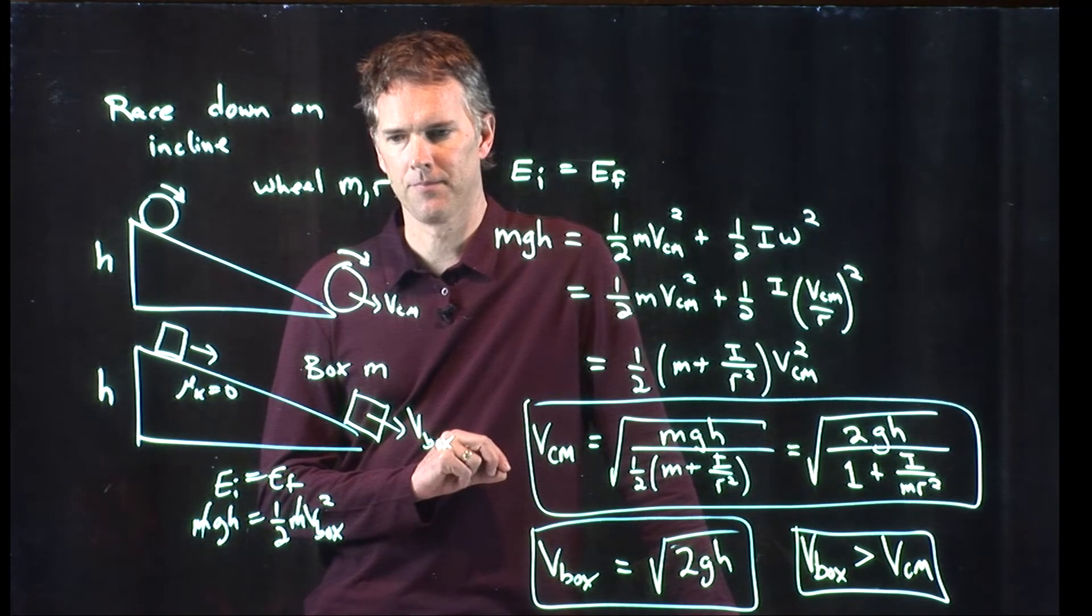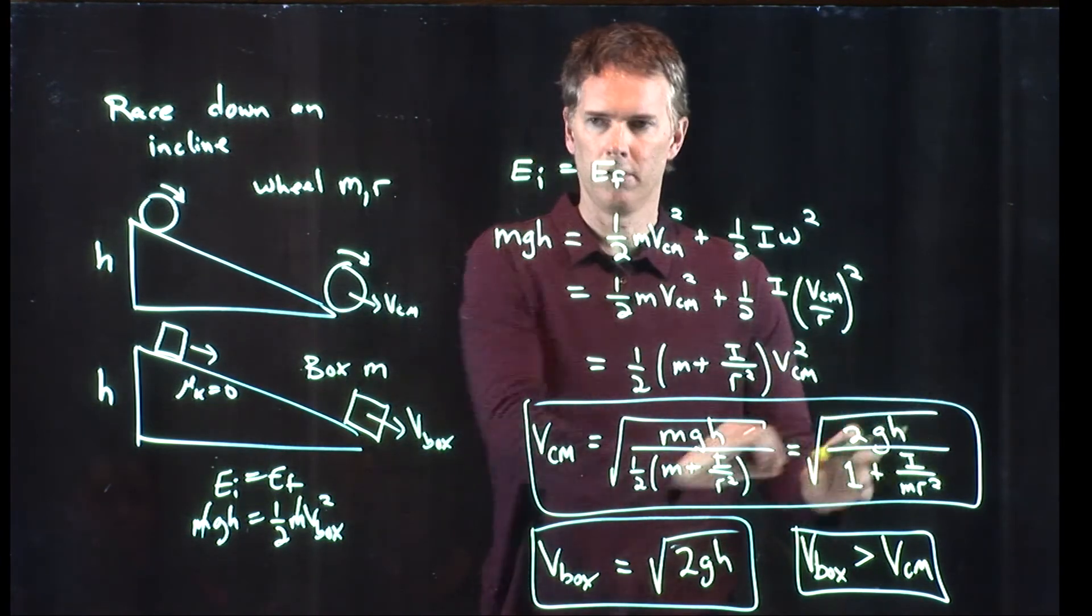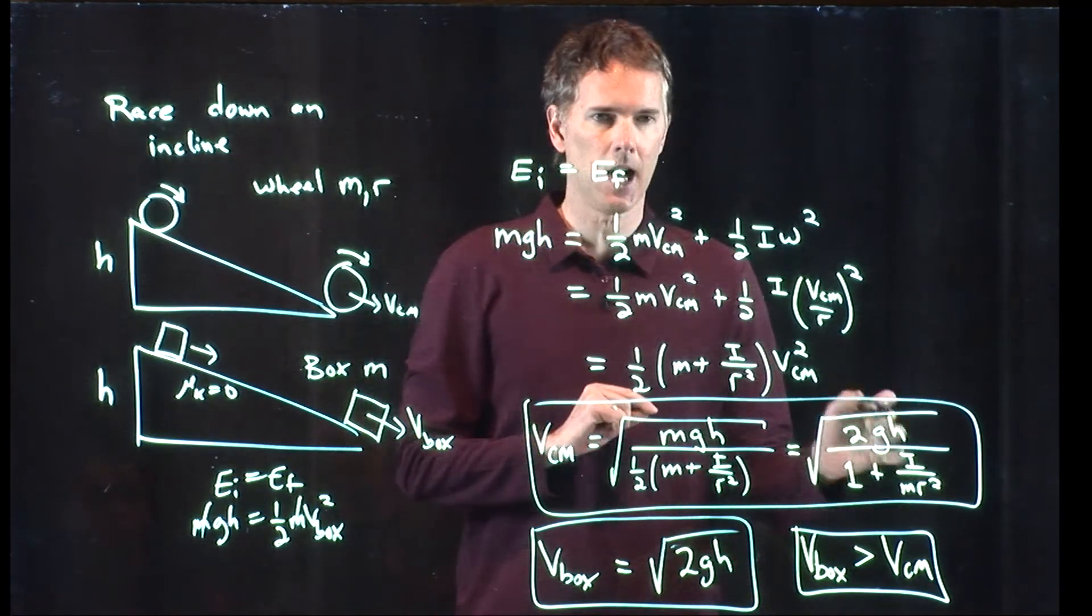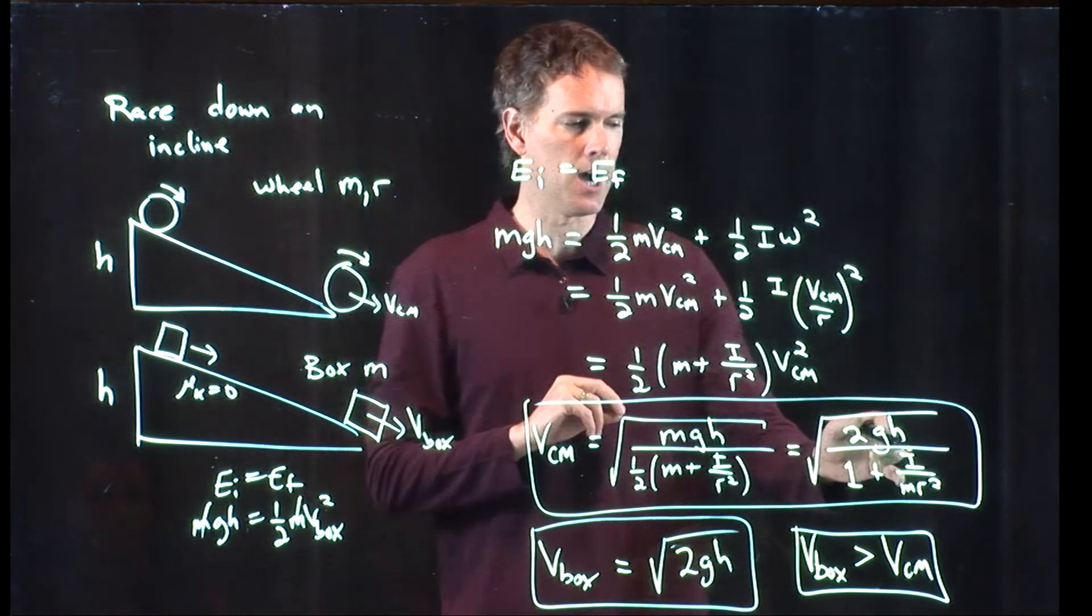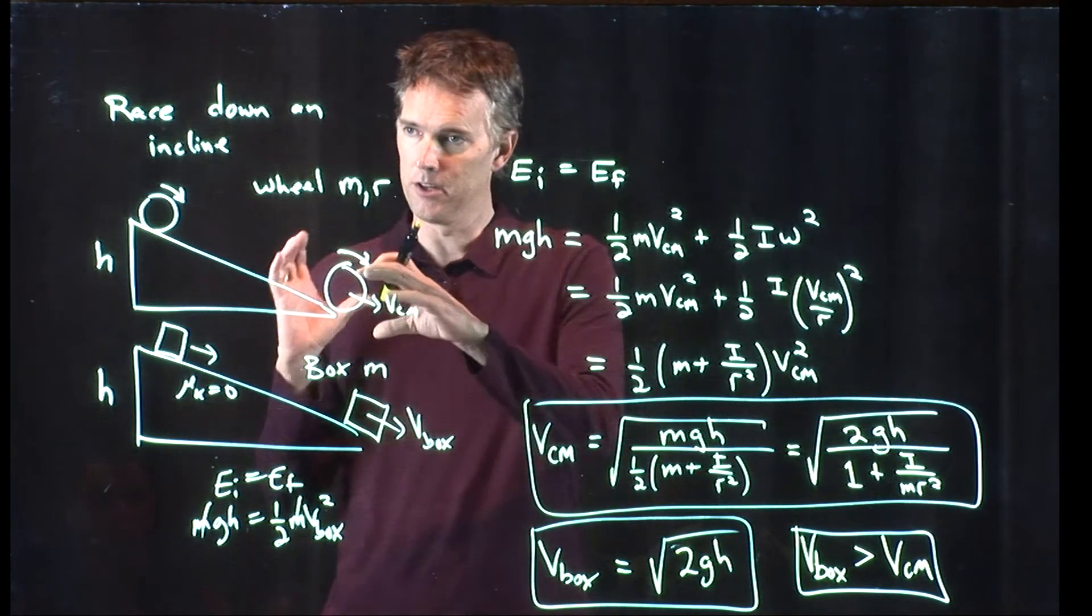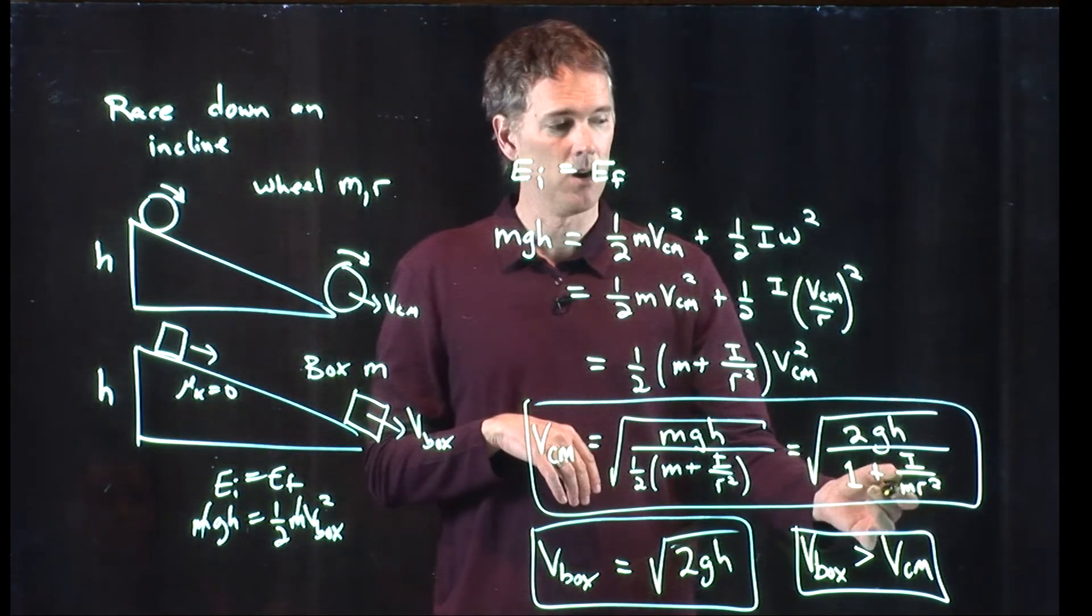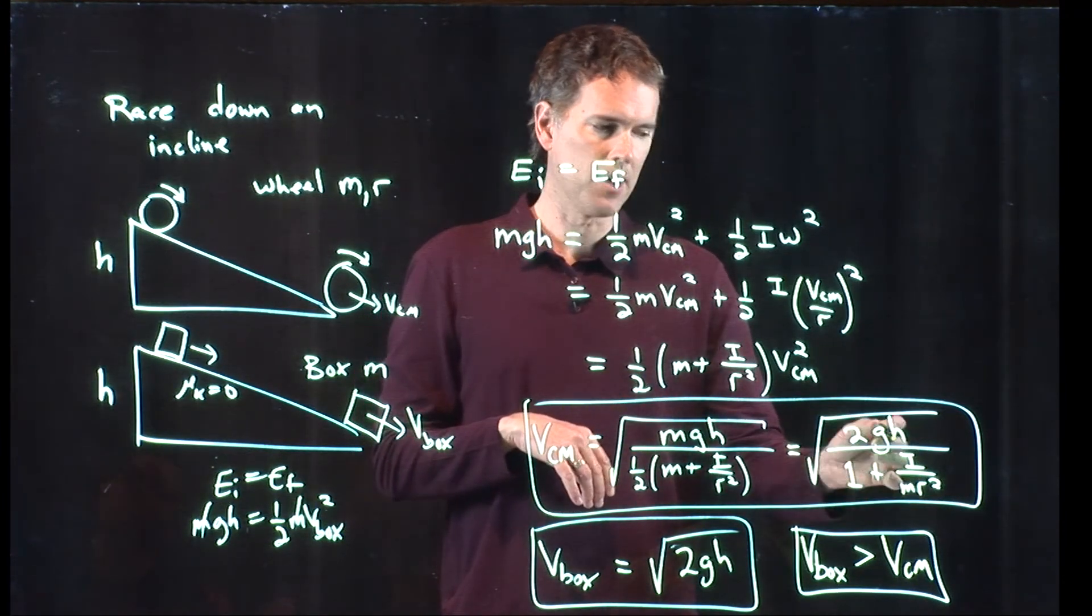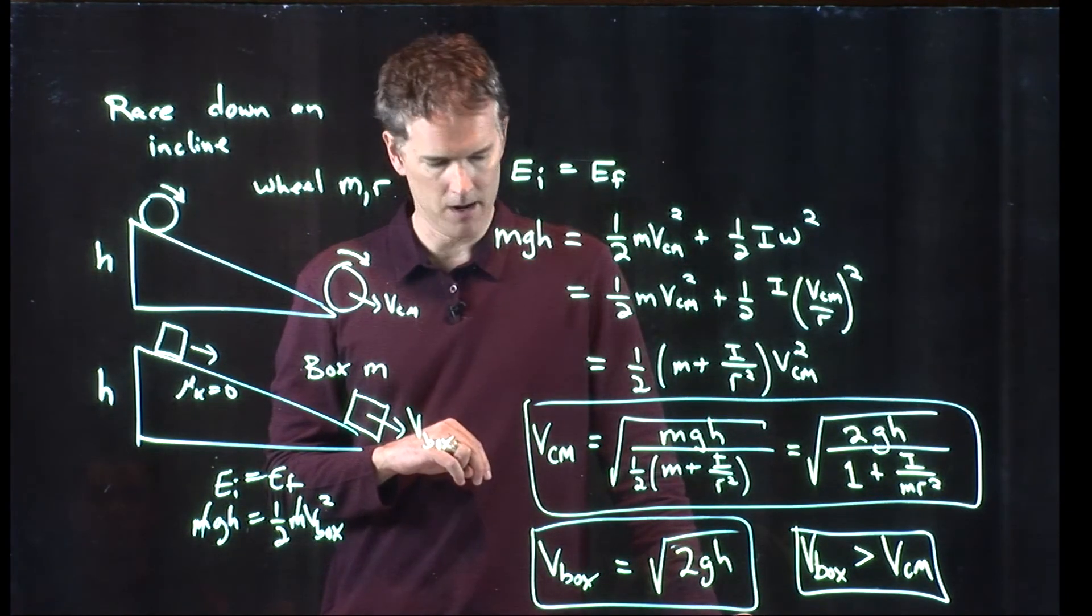Now you can take this equation and you can use this for any object that's rolling down the hill, because we haven't said anything about I. If it is a solid sphere, it has a particular I. If it's a hollow sphere, it has a different I. If it's a cylinder, it has yet a different I. And now you can tell which one is going to win the race and which one is going to lose the race just based on their moments of inertia. Everybody okay with that one?